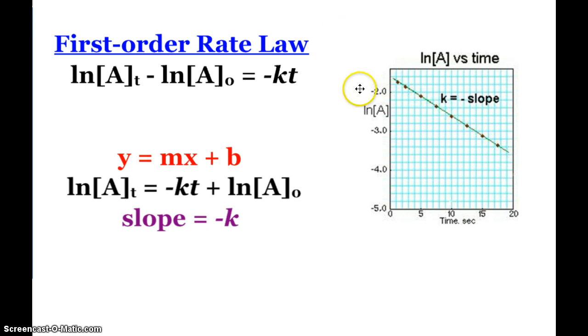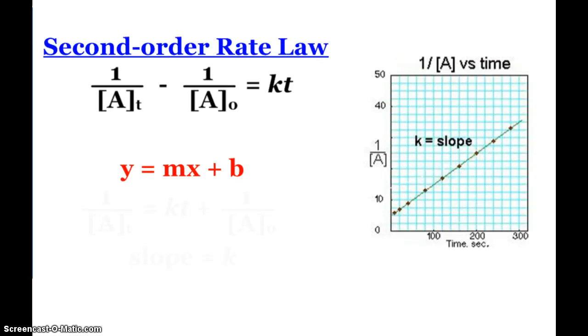If we graphed the natural log of the concentration versus time and did not get a straight line, it might end up like a curve, and then we would know that that reaction is not first order. A second order, if I rearrange the integrated rate law to match y equals mx plus b and if I graphed one over the concentration by time, I would get a straight line for a second order reaction, and the slope of that line would in fact be the rate law constant, k.